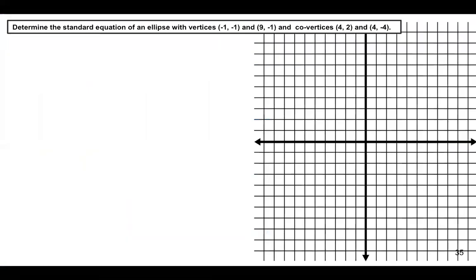Our problem for this session: we will determine the standard equation of an ellipse whose vertices are the points (negative 1, negative 1) and (9, negative 1), and whose co-vertices are the points (4, 2) and (4, negative 4).